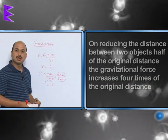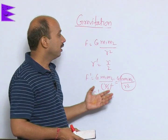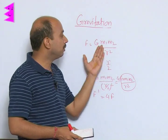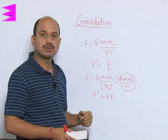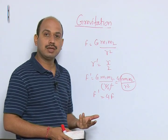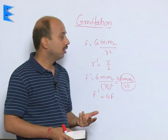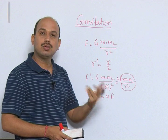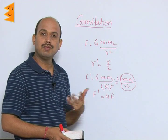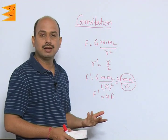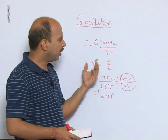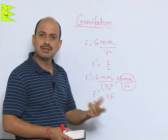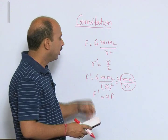Similarly, if you double the masses of each object, how many times does the gravitational force increase? It becomes 2 times from one mass and 2 times from the other mass, so 2 × 2 = 4 times again. So you can do these types of questions, which are very simple and related only to the formula.